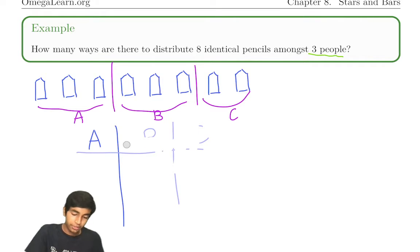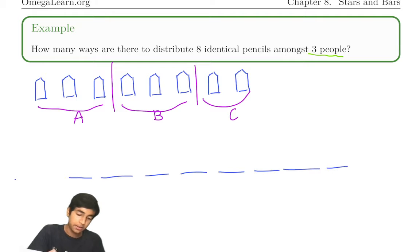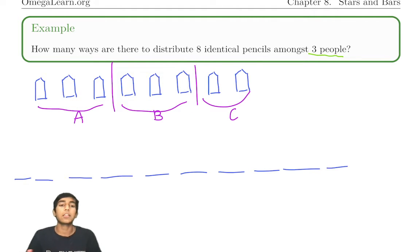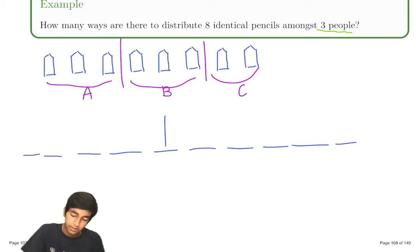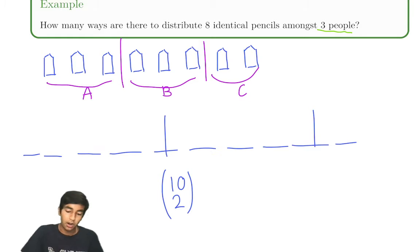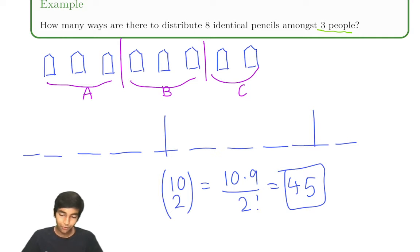How many ways are there to put two bars amongst eight pencils? We have eight pencils and two bars — ten total slots. We select two of them to be bars: ten choose two ways to do this. That's ten times nine over two factorial, which is 45. So the answer for this problem is 45.